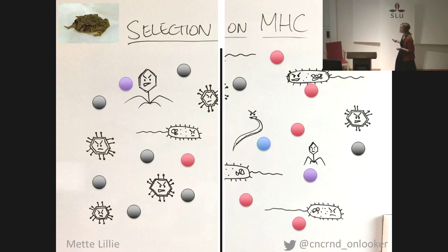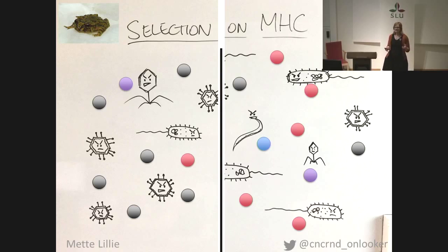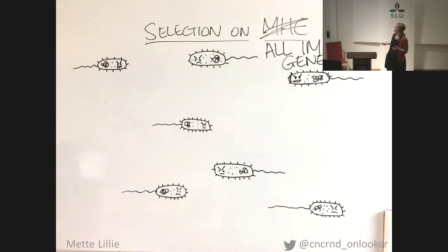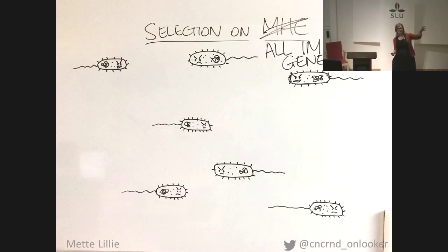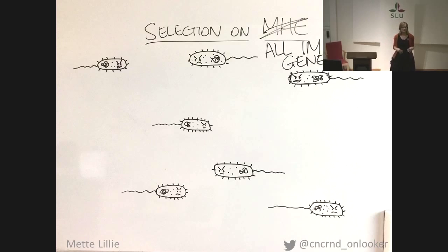But this is actually really, really cool. How is selection driving MHC diversity? In fact, is it a little bit close-minded to just look at the MHC? So I want to know what's happening at all the immune genes. It's a little bit hard — all these pathogens, all these immune genes, what's happening? We need to simplify the system.